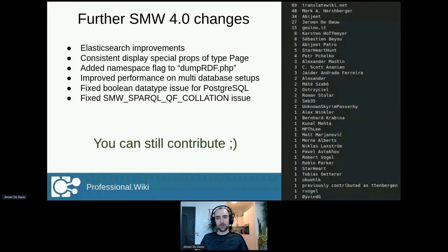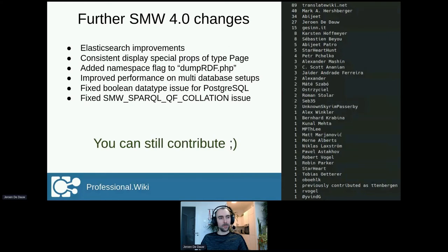Semantic MediaWiki 4.0 also comes with a number of other changes. For instance, there have been improvements to Elasticsearch, including some fixes and compatibility improvements with very recent versions of Elastic. There are no big new flashy features in this release. You will get a full list of changes in the release notes once the release happens. And since it hasn't happened yet, there is still time for you to contribute.